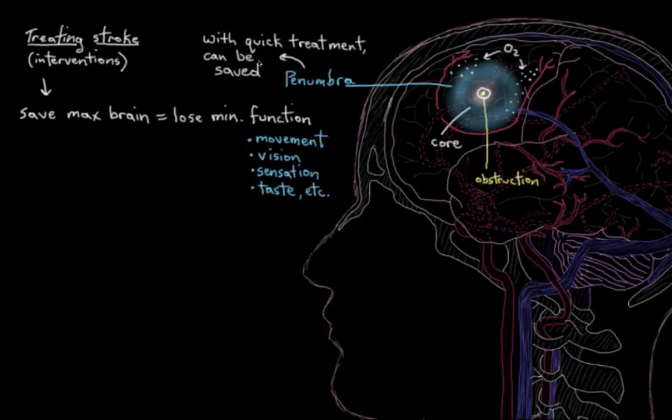When someone comes in having had a stroke, the healthcare team is thinking: let's try to save the core if possible, and let's definitely save that penumbra before it's too late. What sort of treatment can you get after a stroke? Well, it depends on what type of stroke you've had—ischemic or hemorrhagic.